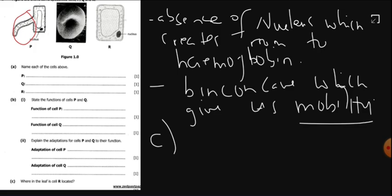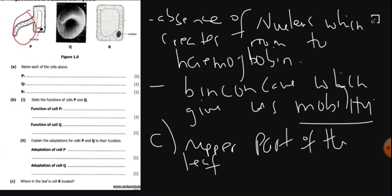Then C is saying where in the leaf is cell R located? That is a palisade cell. Where is it located? It is located on the upper part of the leaf, in the mesophyll.